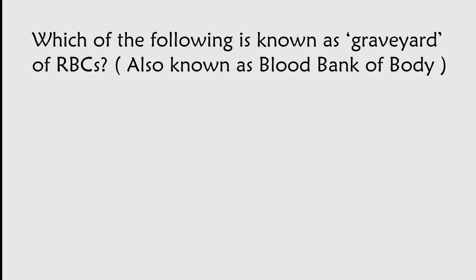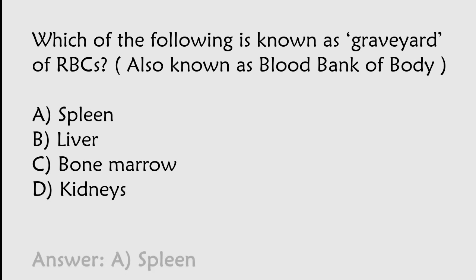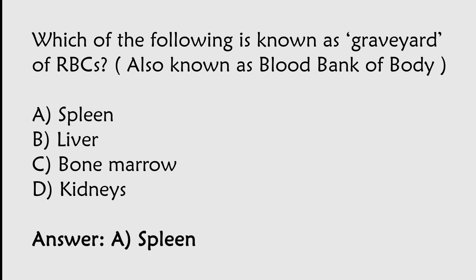Which of the following is known as the Graveyard of RBCs, also known as the Blood Bank of the Body? Options: Spleen, Liver, Bone Marrow, Kidneys. The correct answer is Option A. The Spleen is known as the Graveyard of RBCs, also known as the Blood Bank of the Body.